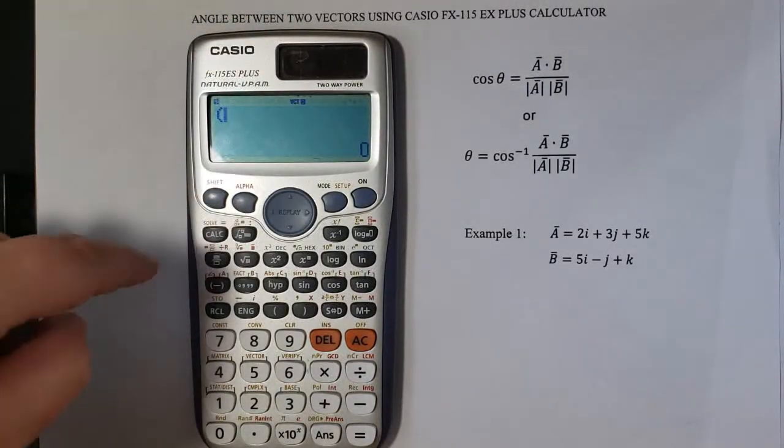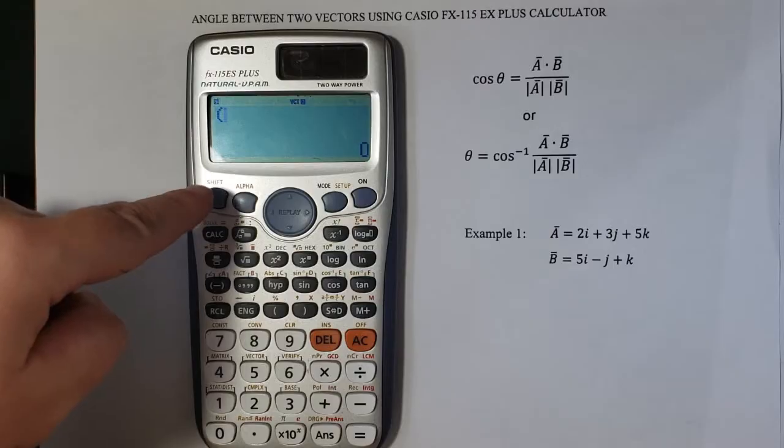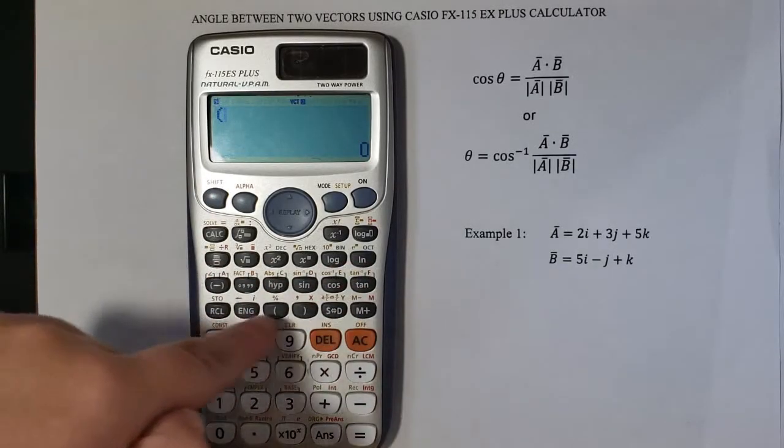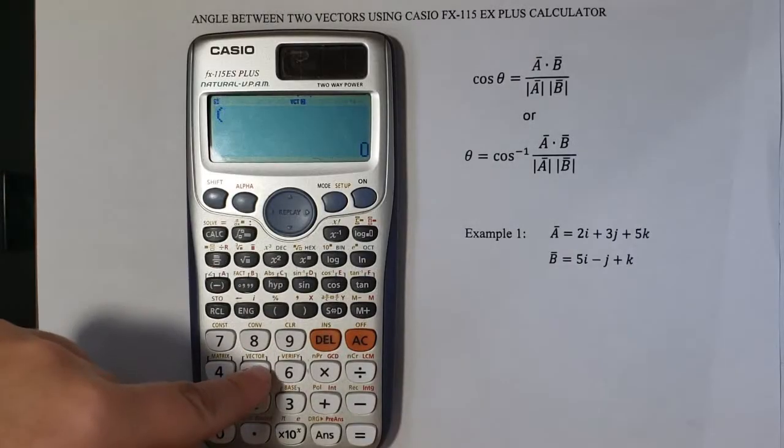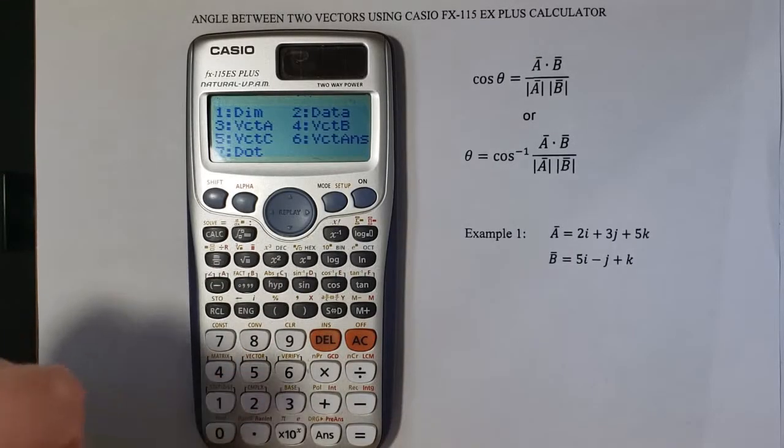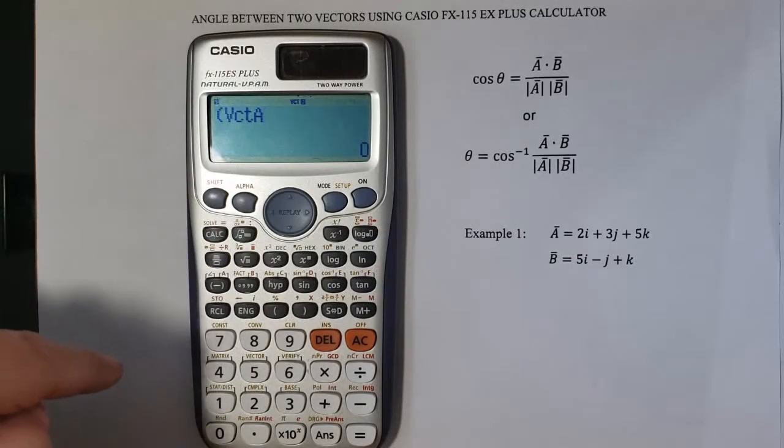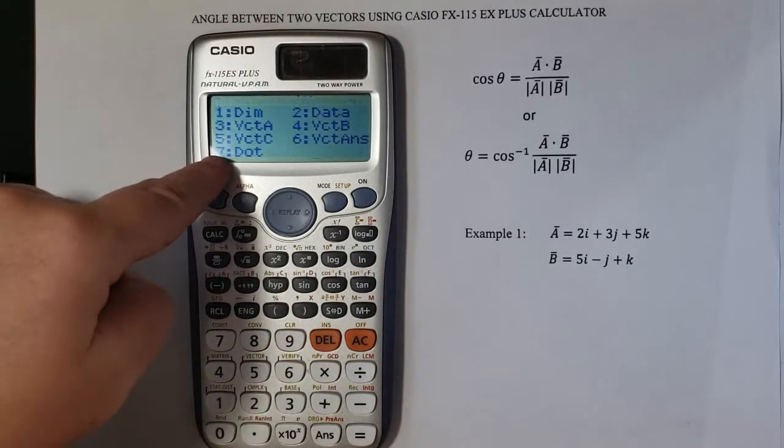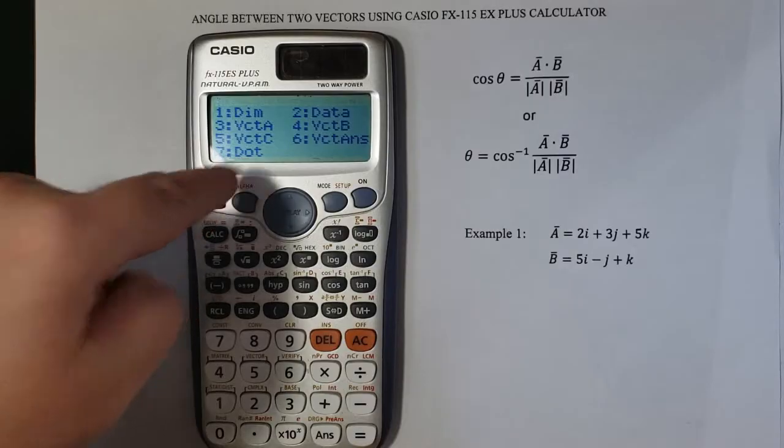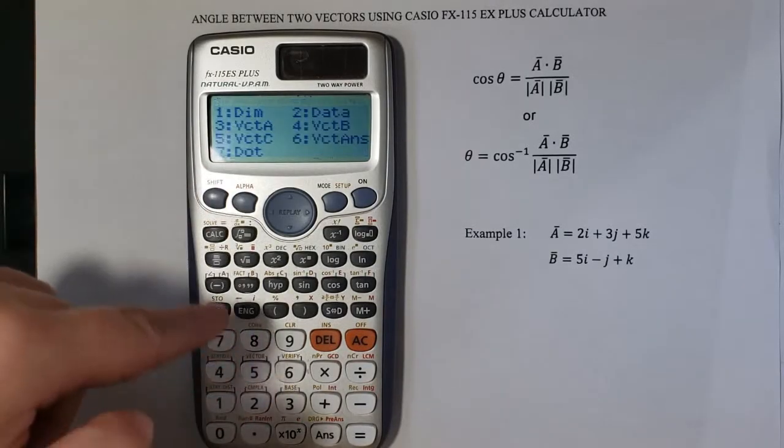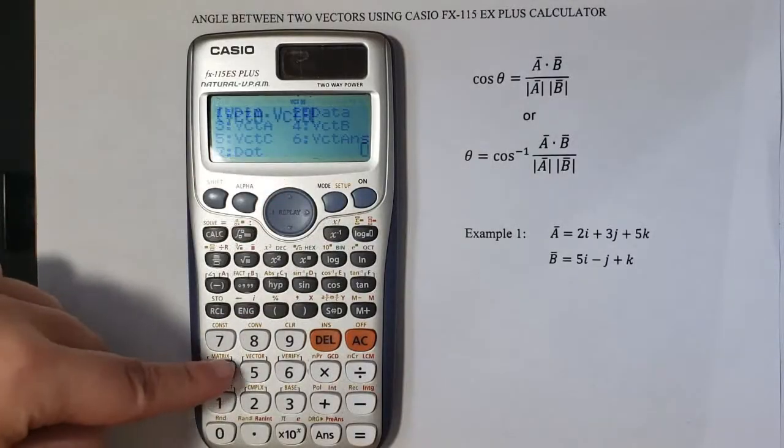I will press SHIFT key. This SHIFT key here is used to access each of the yellow options above each key. SHIFT and then vector and then 3 for vector A. SHIFT again, vector and 7 is for dot. SHIFT again, vector 4 for vector B. Close.